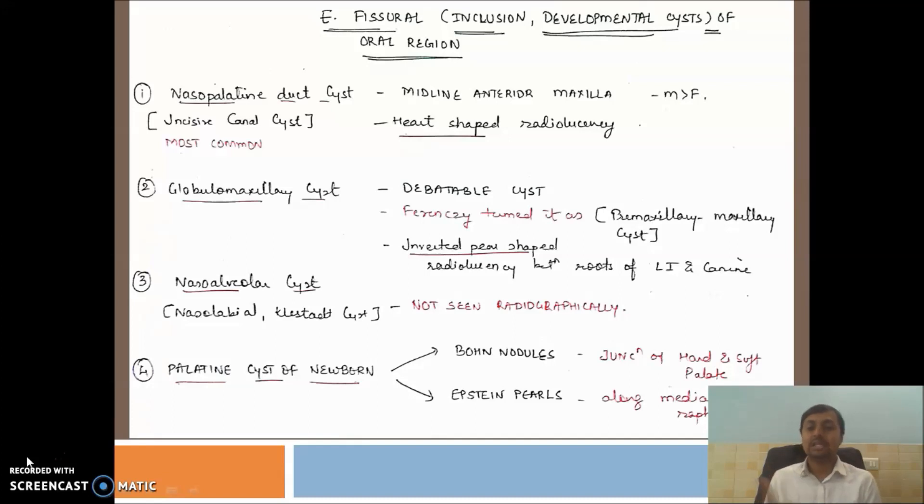Now come to the third cyst, that is median alveolar cyst, also known as median palatal cyst or fissural cyst. I have written it as non-radiographic. It means it is a soft tissue cyst that involves the bone secondarily. The last is the palatine cysts of newborn, also known as median palatal cysts. They are keratin cysts. There are two types: Bohn's nodules and Epstein pearls. If it is seen at the junction of the hard and soft palate, it is Bohn's nodule. If it comes along the mid-palatine raphe, it is Epstein pearl. They are mostly formed from the epithelial remnants of dental lamina. After the fourth week of intrauterine life, four weeks intrauterine, it is seen done.